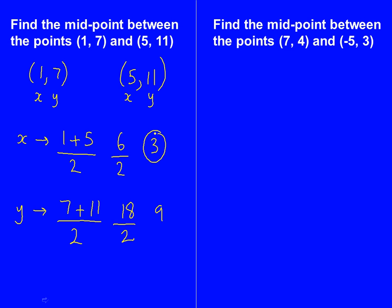So we now have our x and y coordinate. Our x coordinate is 3. Our y coordinate is 9. So we just write it as 3, 9. That's our midpoint.